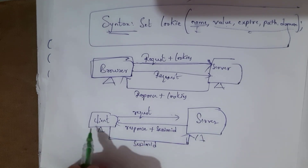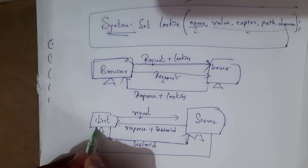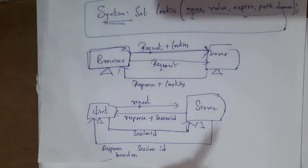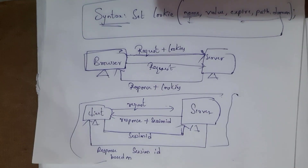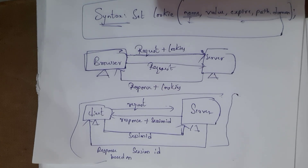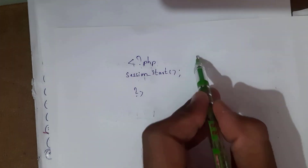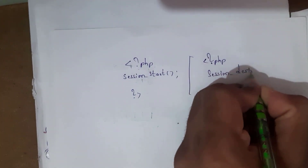In the session structure: the client sends a request to the server, and the server responds with a session ID. Subsequently, whenever you access the same site, you send that session ID, and the server recognizes the user and responds accordingly. A real-time example is YouTube — if you close a video and reopen it, it won't buffer again because your session is still active. We use session_start() to start a session and session_destroy() to destroy it.